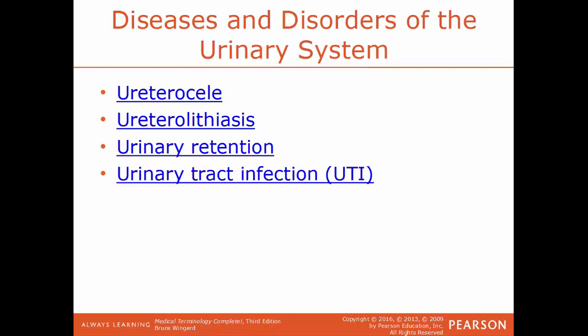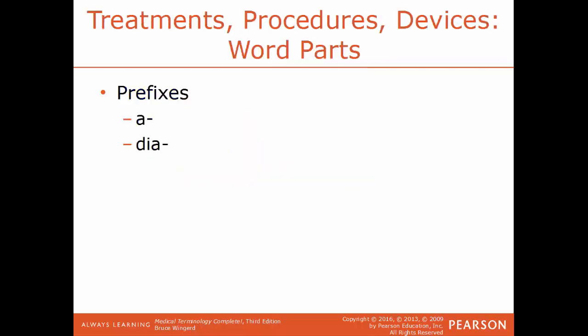Urinary retention is the inability to completely empty out the bladder, and this can be a chronic or acute condition. UTI, urinary tract infection, is any infection of the entire urinary tract — the kidneys, ureters, urinary bladder, or urethra. Most UTIs will occur in the lower part of the urinary tract, the urethra and the bladder.